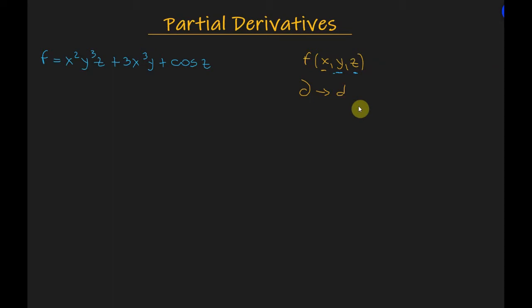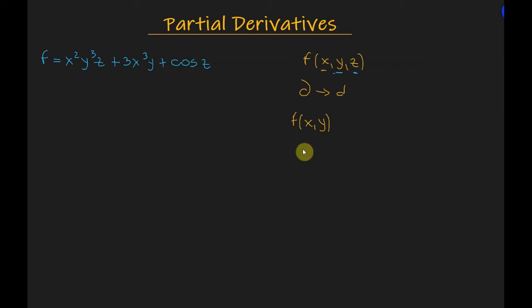When we are given a function of the variables x and y, the partial derivative of the function with respect to x is denoted as the partial derivative of f with respect to x, and this is a first-order partial derivative.